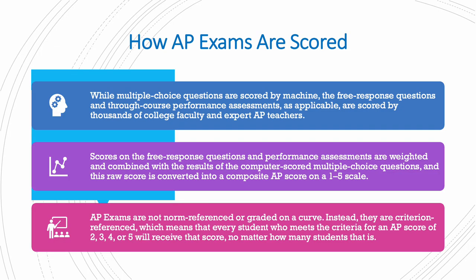How are AP exams scored? The multiple choice questions are scored by machine, while the free response questions are scored by thousands of college faculty and expert AP teachers. Scores on the free response questions and performance assessments are weighted and combined with the results of the computer-scored MCQs, and this raw score is converted into a composite AP score on a 1 to 5 scale. AP exams are not norm-referenced or graded on a curve; instead, they are criterion-referenced, meaning every student who meets the criteria for a score of 2, 3, 4, or 5 will receive that score no matter how many students that is.